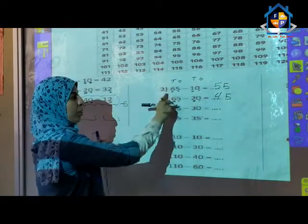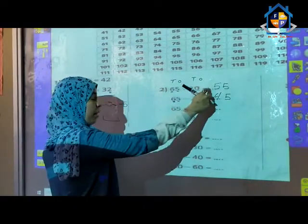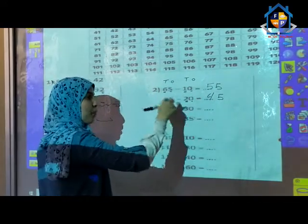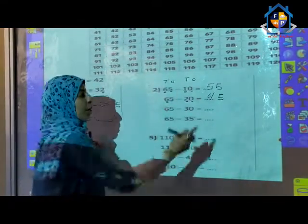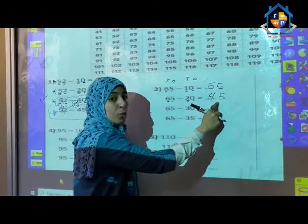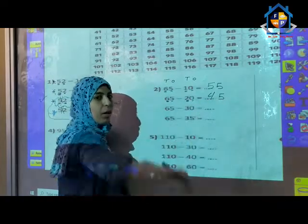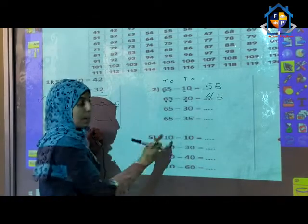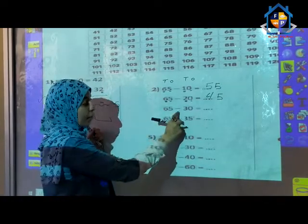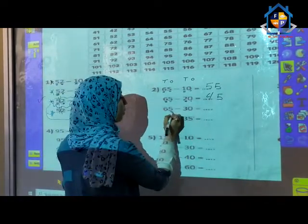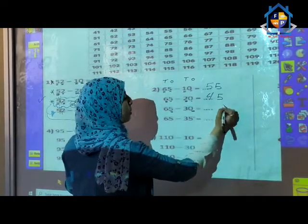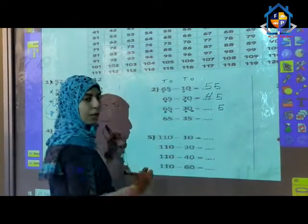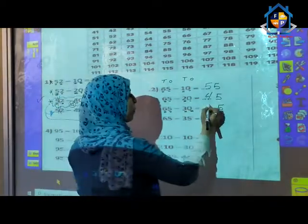When I subtracted 10 the remainder was 55. When I subtracted 20 — a bigger number — the remainder was 45, a smaller number. In the same sequence, the third problem: 65 minus 30. Ones: 5 minus 0 equals 5. And 6 minus 3: after 3, 4, 5, 6 — that is 3. Answer is 35.